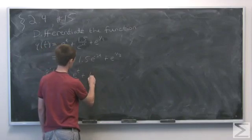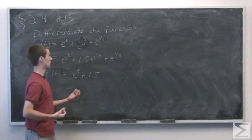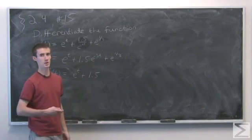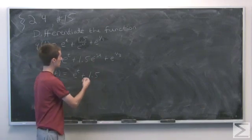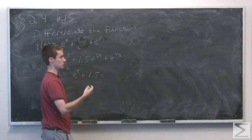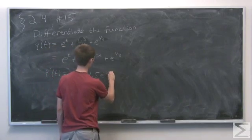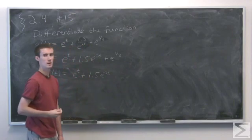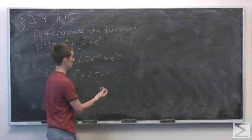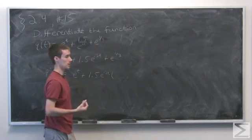And the derivative of the second term would be 1.5. Now here we have a composition where we have the function minus 2t kind of sitting inside the exponential function. So we first take the derivative of the outer function, which in this case is the exponential, and evaluate it at the inner. So e to the minus 2t. And now we want to multiply by the derivative of the inside function, which is minus 2t, so we're multiplying by minus 2.